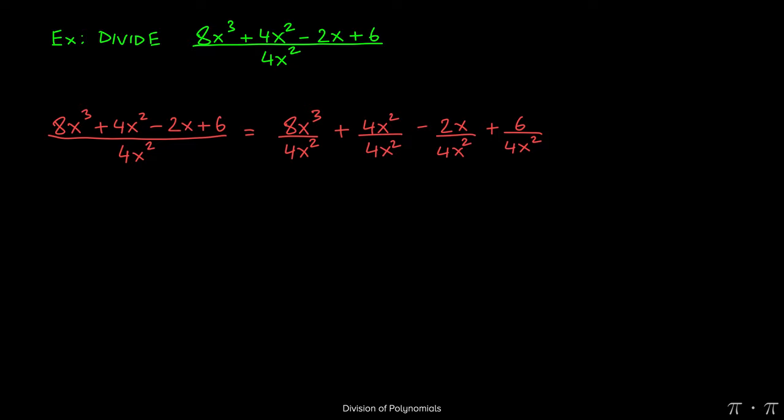At this stage, we can simplify each fraction by itself. 8 divided by 4 will give us 2. x cubed divided by x squared will yield just an x. Dividing something by itself will always yield 1, so 4x squared divided by 4x squared will be 1.